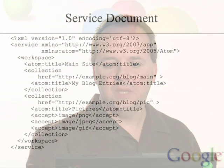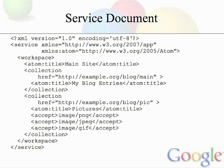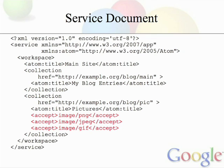So how do you discover which collections are available? That's where the service document comes into play. That contains information about all of the collections that a service supports. If you look at a service document, you'll see that there are collections grouped together into workspaces. Here, we're looking at a collection that just takes entries, and right there in that href, that is the URI for our collection — we can POST to that to add new things. There are actually two collections in the service document, and the second one is a media collection. Those accept elements tell you the types of media you're allowed to post to that collection — in this case, it can accept JPEGs, PNGs, and GIFs.